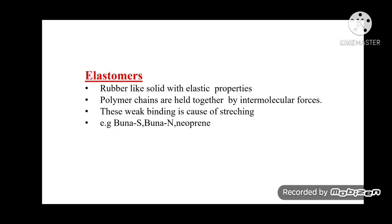Elastomers are rubber-like solids with elastic properties. Polymer chains are held together by weak intermolecular forces, and this weak binding allows stretching. Examples include Buna-S, Buna-N, and neoprene.